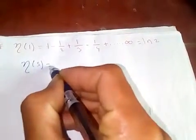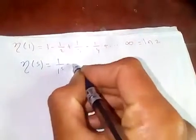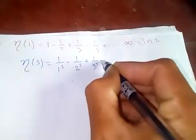The eta function is defined as 1/1s - 1/2s + 1/3s - 1/4s + ... and so on.